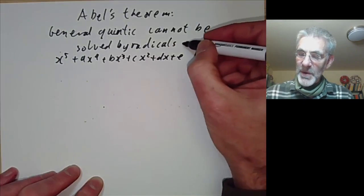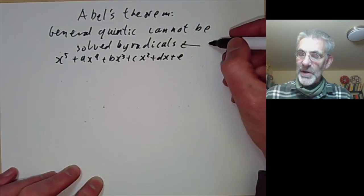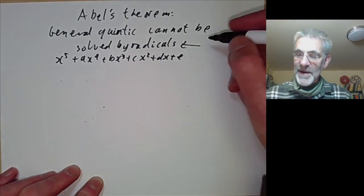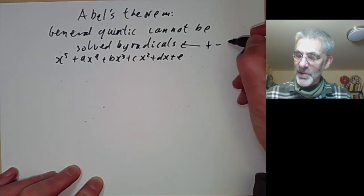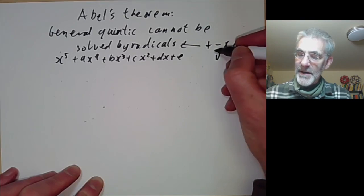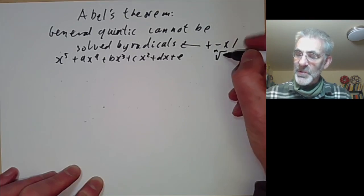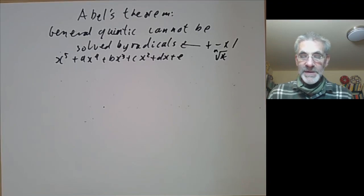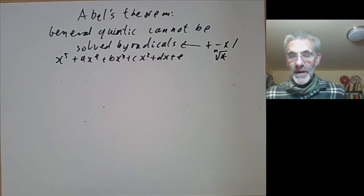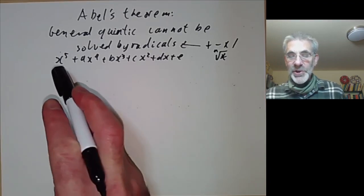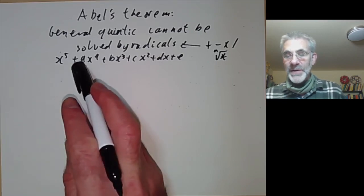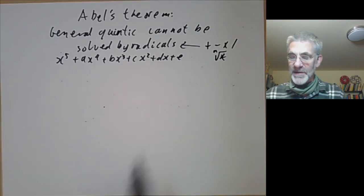Solvable by radicals means you can write down the solutions explicitly in terms of a, b, c, d and e using the field operations and taking nth roots of something, where n is allowed to be anything at all. A little bit later we're going to show that you can solve polynomials of degree 3 and 4 by radicals.